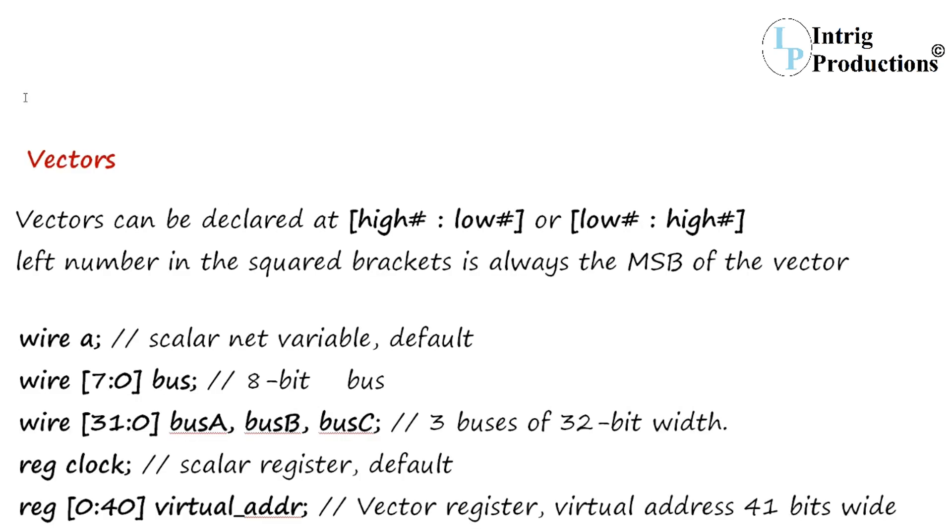Vectors is a kind of data type in Verilog programming language in which a single variable holds a set of bit values. Vectors can be declared at high to low or low to high, where the left number in the square brackets is always the MSB of the vector.